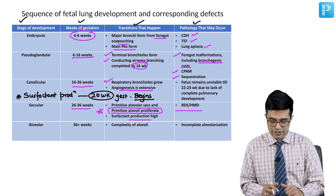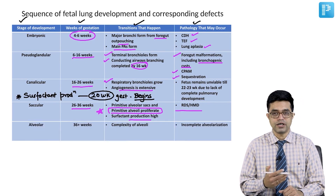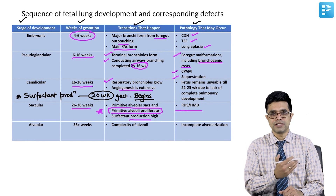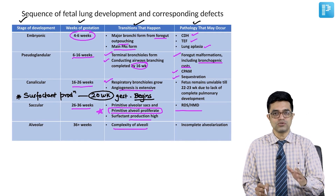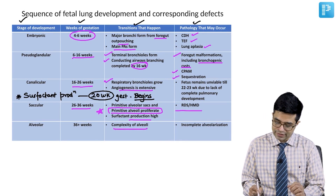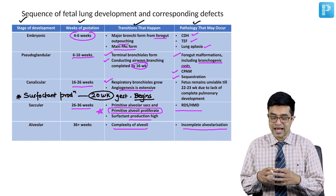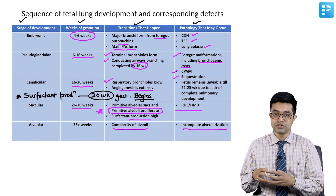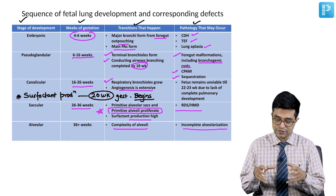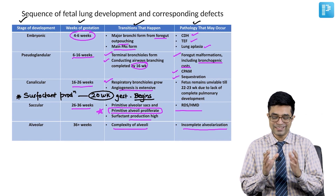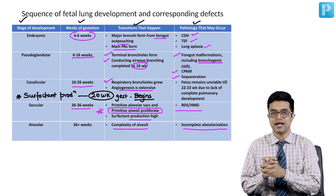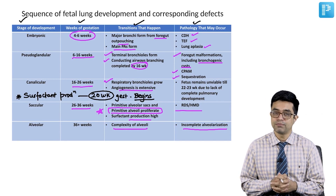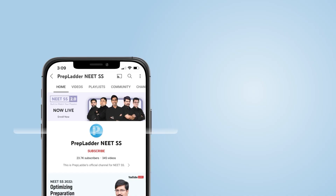Finally, the alveolar stage occurs beyond 36 weeks. Here the complexity of alveoli develops. Incomplete alveolarization can occur as a pathology if this process is interrupted. This is the complete sequence of fetal lung development and the corresponding points you need to remember.